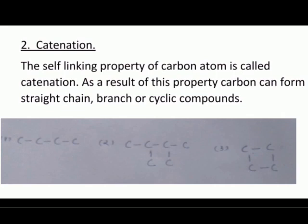The second reason is catenation. The self-linking property of carbon atoms is called catenation. As a result of catenation, carbon can form straight chain, branched, or cyclic compounds.